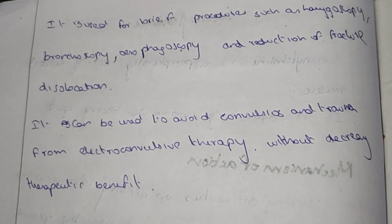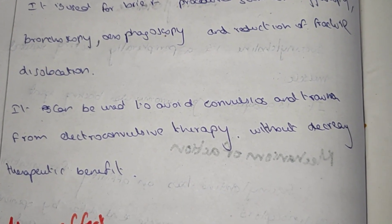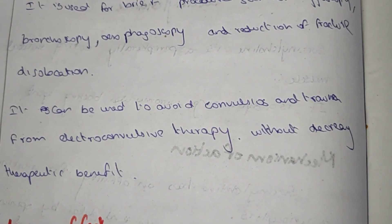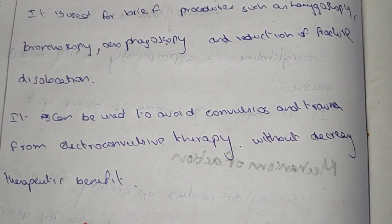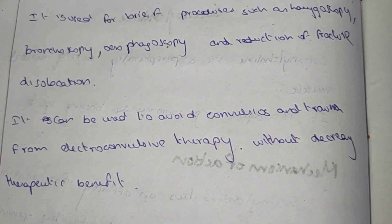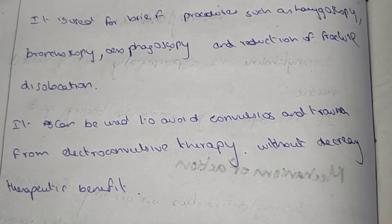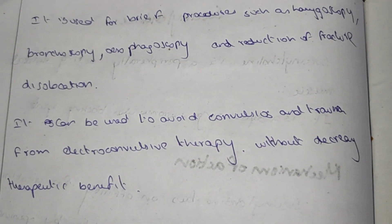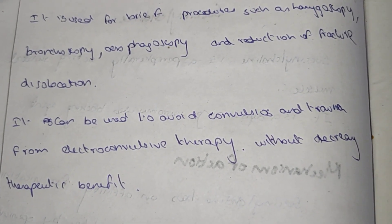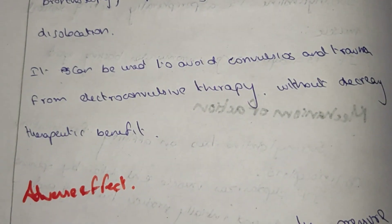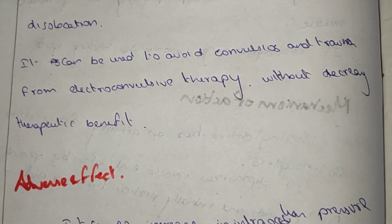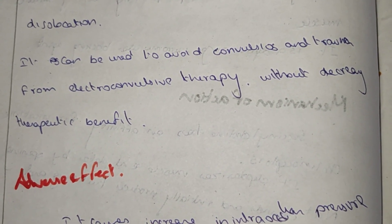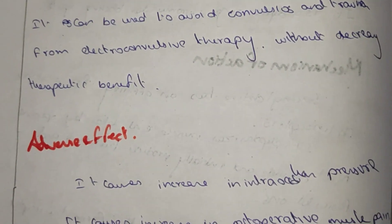Succinylcholine is used to relax the muscles when inserting a tube into the mouth, esophagus, bronchus, or larynx. It can also be used to avoid convulsive trauma during electroconvulsive therapy without decreasing the therapeutic benefit.